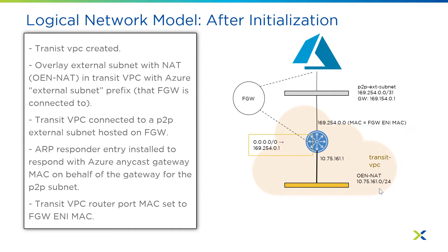So we can use that to get our requests coming in. We have a subnet range assigned during the process. Here we have a slash 24 for our overlay external subnet NAT. We will use this OEN NAT in the rest of the diagrams as well. The VPC router is consuming one of the IPs from this OEN NAT, and as you create additional user VPCs, they will also consume IPs out of that range as well.